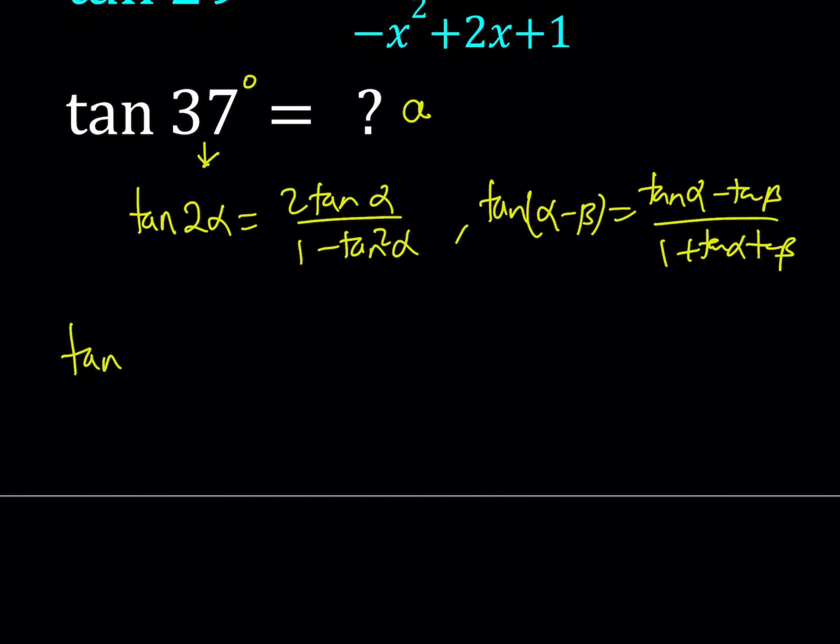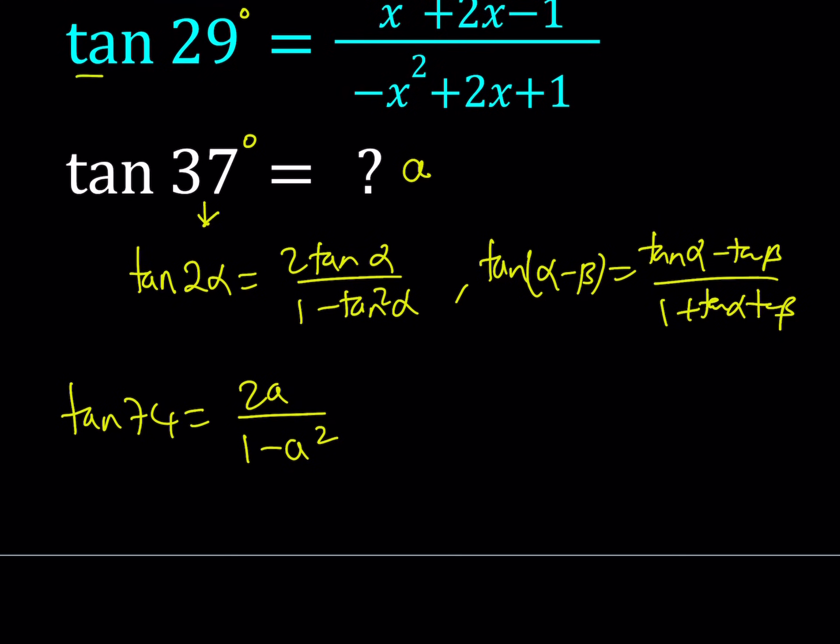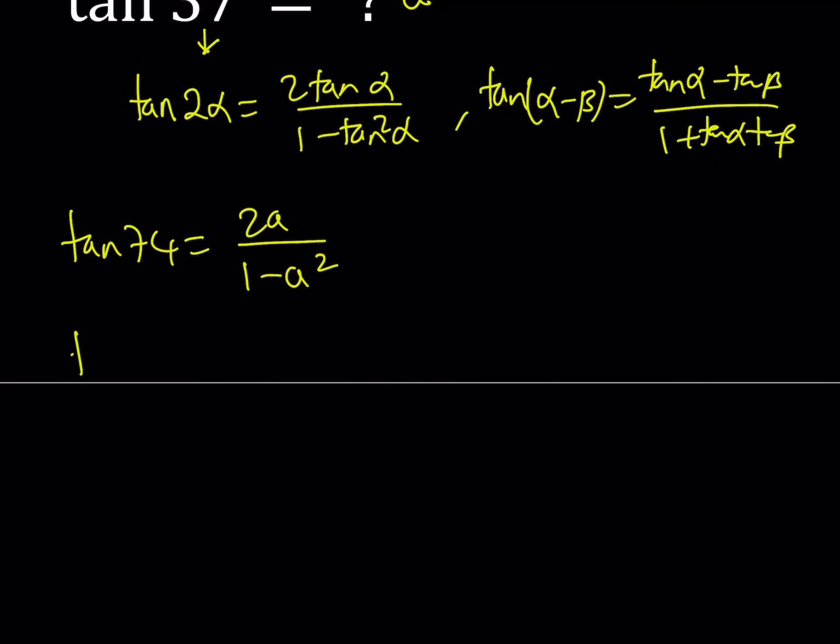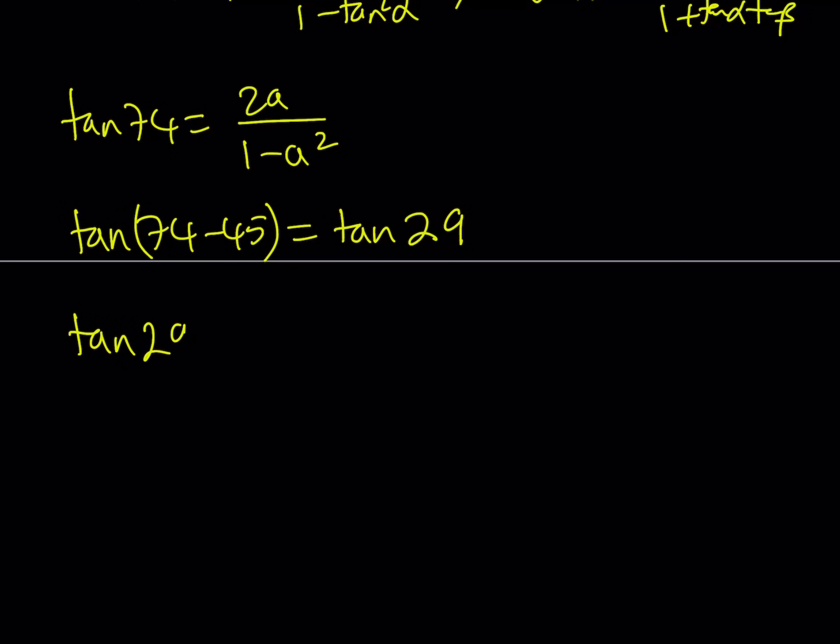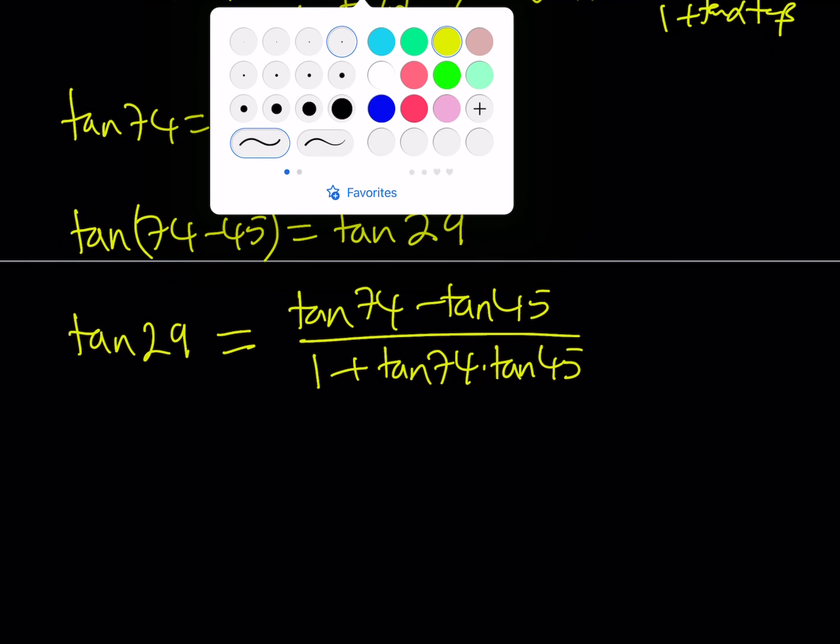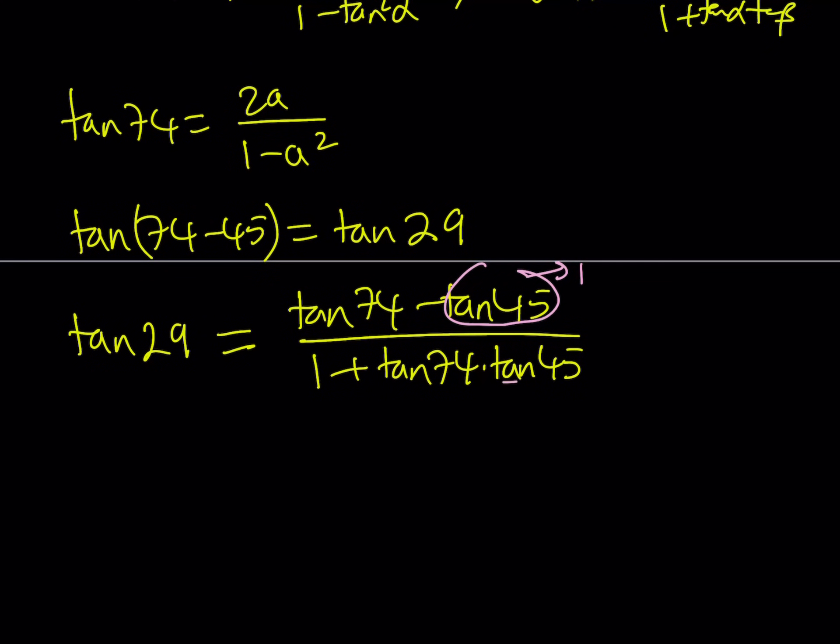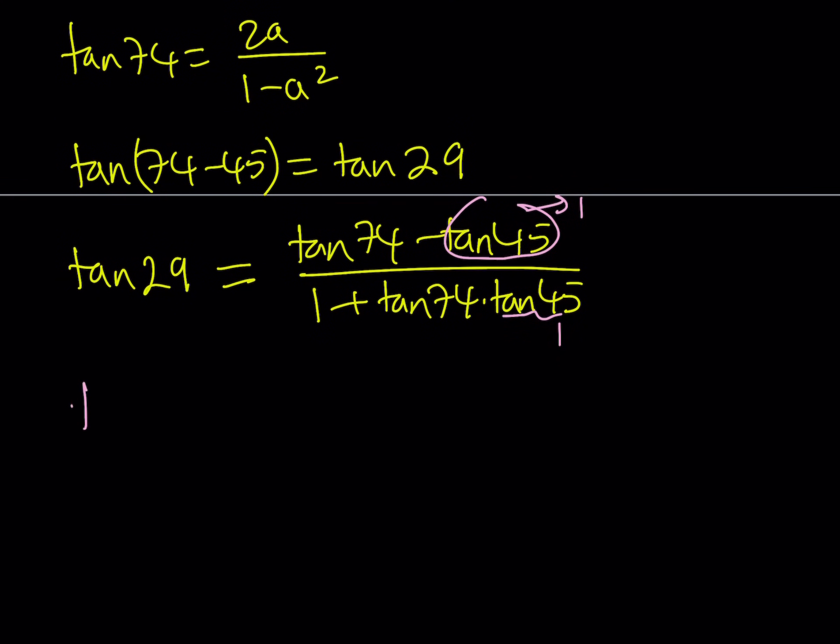Let's go ahead and double the 37. That's going to become 2a over 1 minus a squared. Now, I want to get tangent 29 from the 74. So I'm going to subtract 45 from 74 and that's going to give me 29. Therefore, tangent 29 can be written as tangent 74 minus tangent 45 divided by 1 plus tangent 74 multiplied by tangent 45. Remember that tangent 45 is equal to 1. So we can just go ahead and replace them with 1.